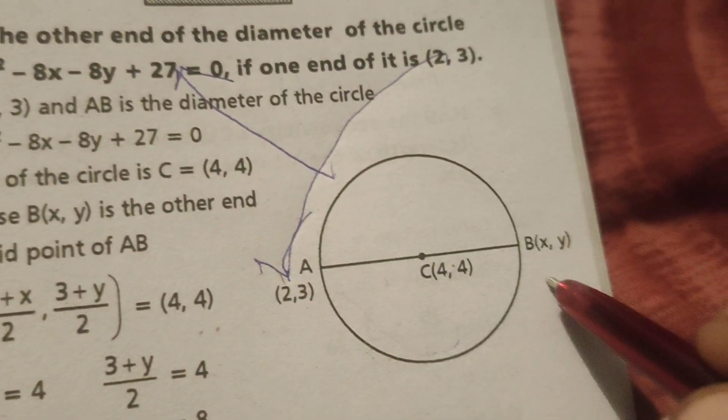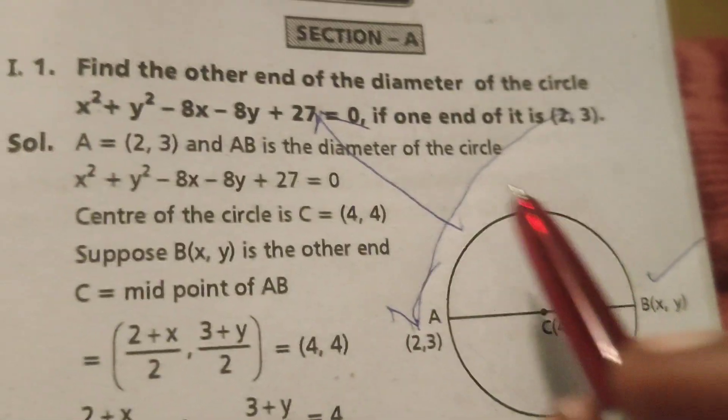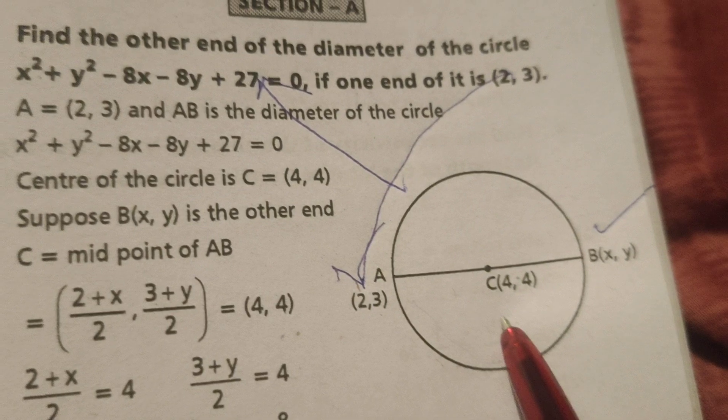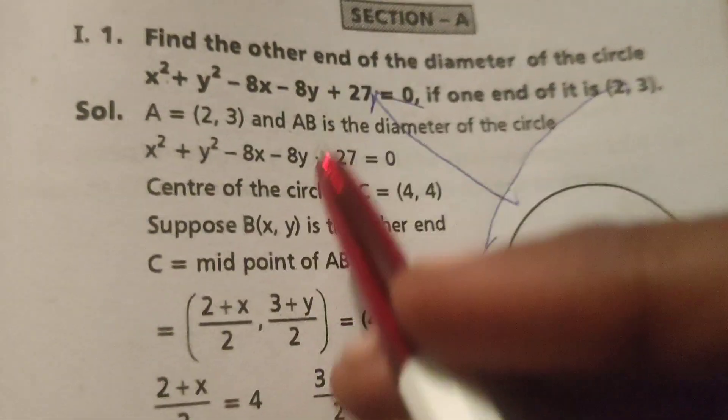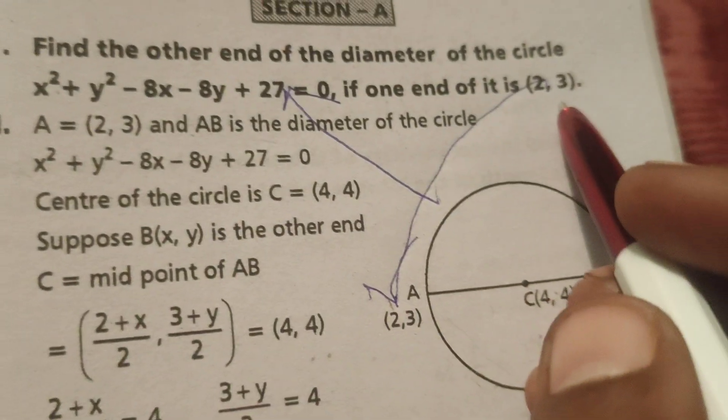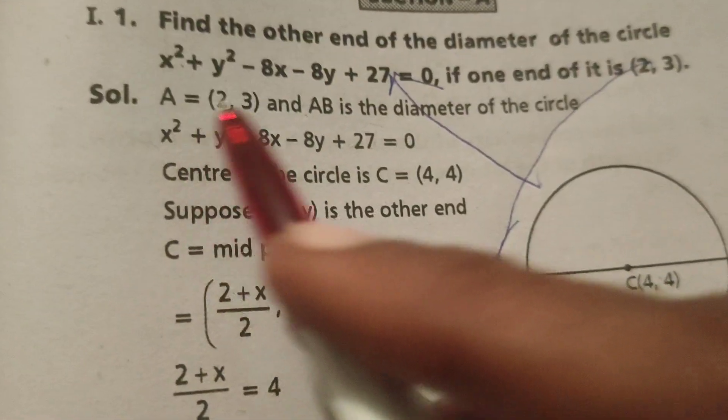Now find out the other end of the diameter. In this given circle, find out the center C. First of all, write the given circle equation and one end of the diameter as A(2, 3).